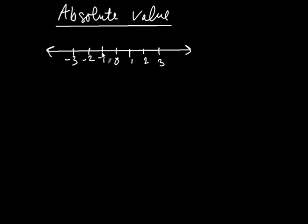Now, if you were over here and somebody asked you how far were you from the origin, you'd still say one mile. So the point is that distance is always positive, even if the number you're located at happens to be negative. For example, if you were located right here, you'd say you were at a distance of two miles from the origin. And likewise, you'd say you were at a distance of three miles from the origin.